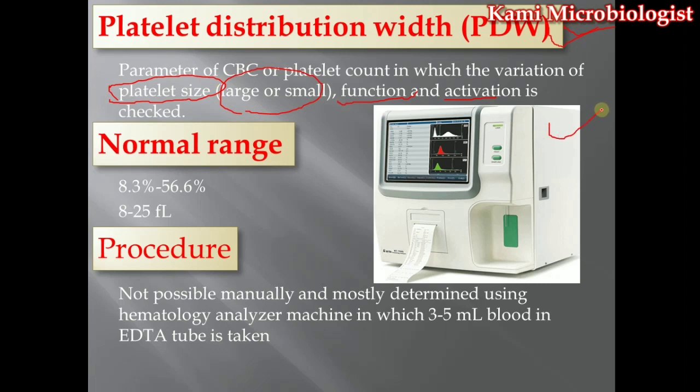If you are using a hematology analyzer machine, it will give you the PDW — platelet distribution width. You remove the cap from the EDTA tube, place the EDTA tube in the machine, dip the needle into the blood, and press the button. The machine takes the blood and after about five minutes gives you the report — not only the PDW but other CBC parameters as well.